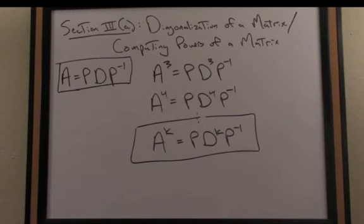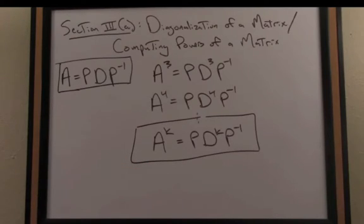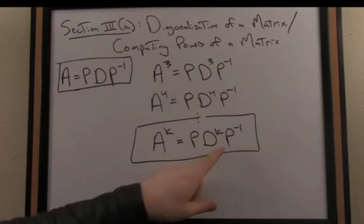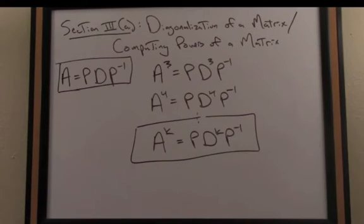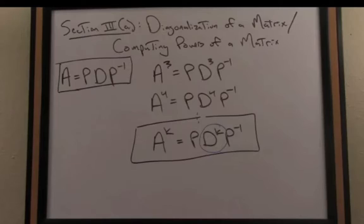Now notice the computational savings we're getting here. If K were a colossal power, like 10,000, in lieu of doing literally millions of computations to compute the power of A, I could instead just multiply those three matrices together. Now you might wonder, what about the computational power required to determine the diagonal matrix D to a power?